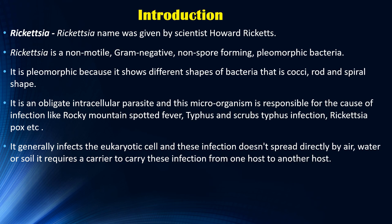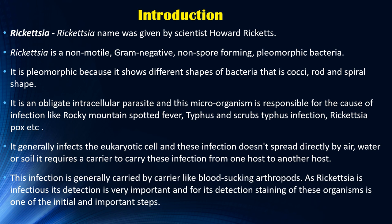Rickettsia generally infects the eukaryotic cell. These infections do not spread directly by air, water, or soil. It requires a carrier to carry these infections from one host to another host. This infection is generally carried out by carriers like blood-sucking arthropods. As Rickettsia is infectious, its detection is very important, and staining of these organisms is one of the initial and important steps.